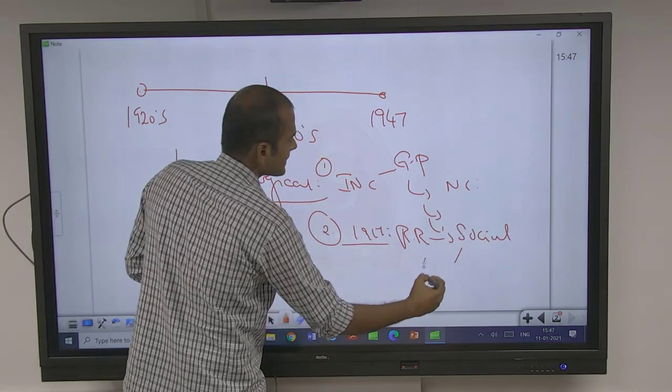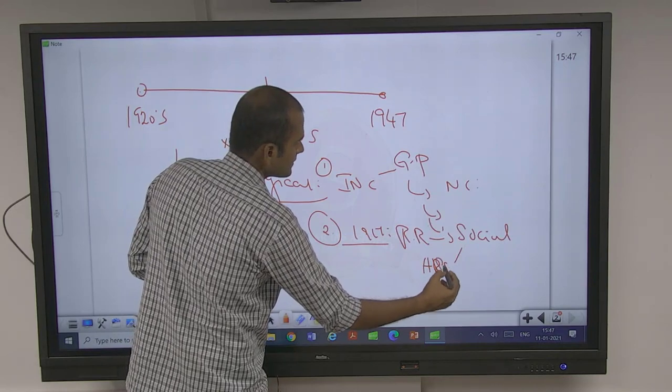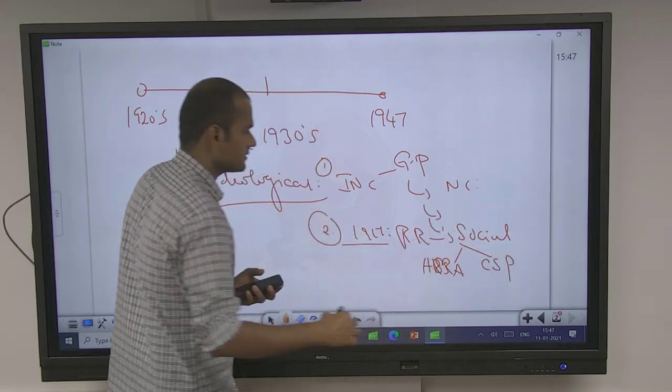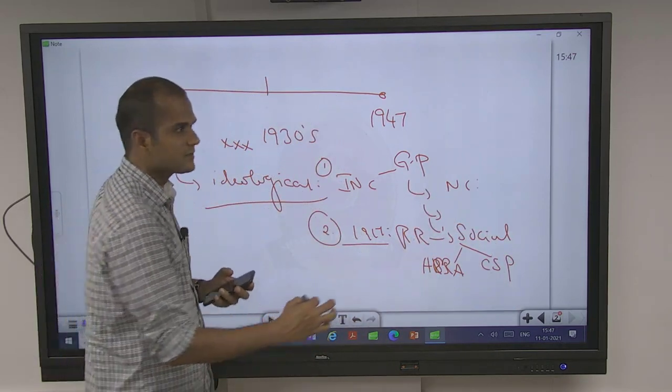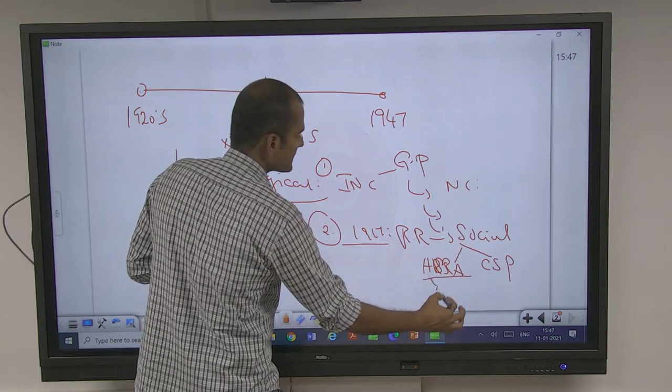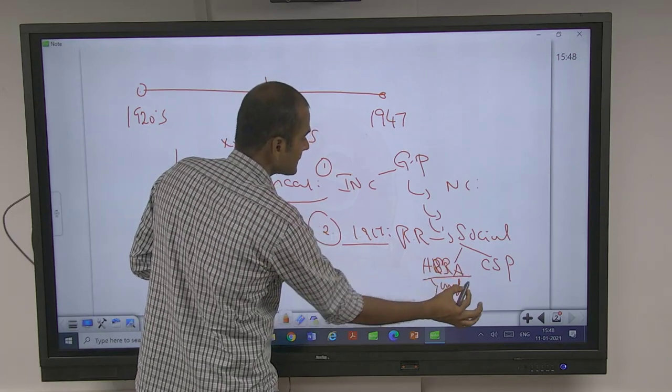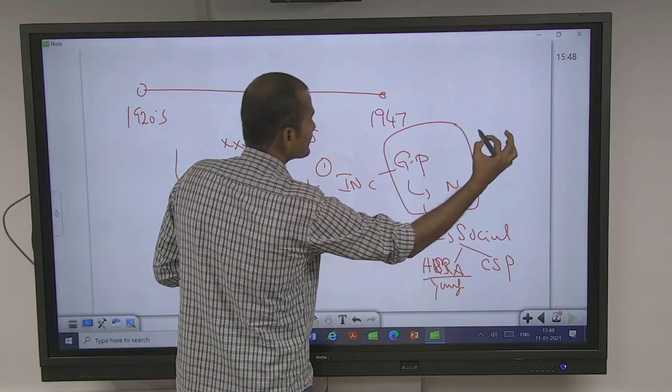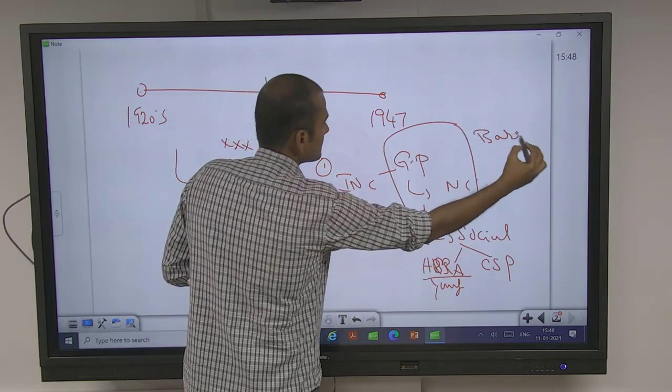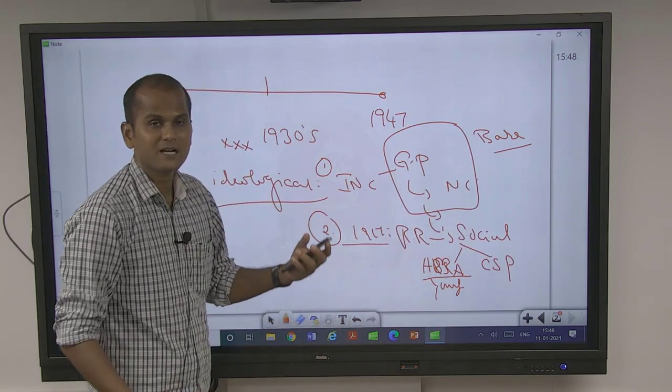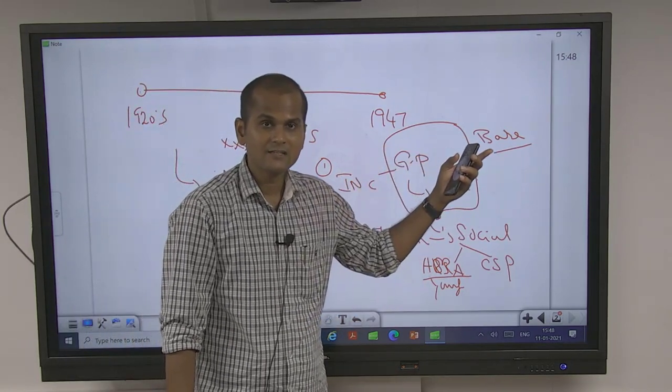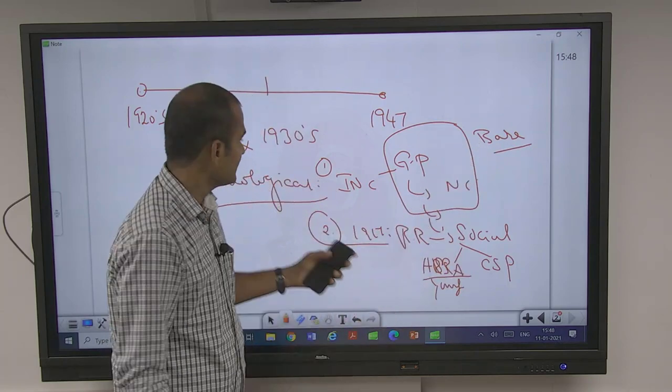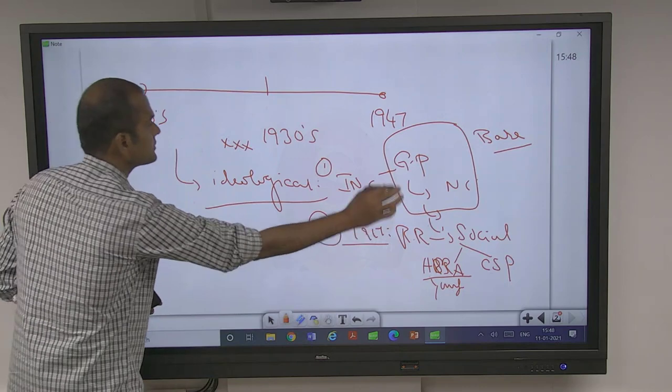Because of socialist ideas, revolutionaries HSRA, another is Congress Socialist Party. Because of HSRA, youngsters entered. So social base is included. Even with the arrival of Gandhiji, social base was included. Peasants participated. First time peasants participated in the national movement during Gandhian phase. Here youngsters participated. This is the second socialist base.